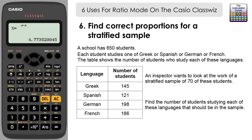The sixth use for ratio mode is finding the number required for each stratum in a stratified sample. A school has 650 students studying Greek, Spanish, German, and French. An inspector wants a stratified sample of 70 students, meaning the sample must be representative of the proportions of each language in the population of 650. Return to the input screen and reset.